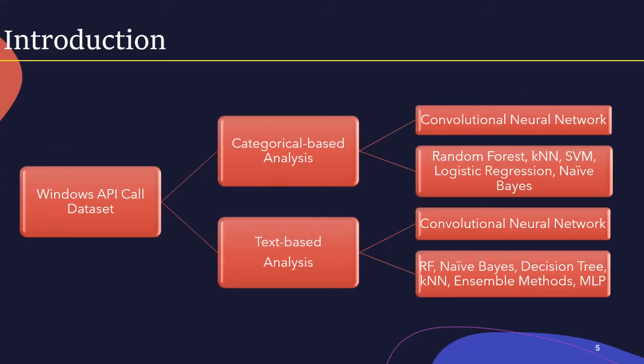In this study, we proposed two different approaches to classify the type of malware based on its API call stream. The study presented both binary and multi-class classification problems. We used a public Windows API call dataset with eight-class malware for the experiments. We used a one-dimensional convolutional neural network by mapping API call streams as categorical vectors and TF-IDF vectors, and compared the results with other classification algorithms.